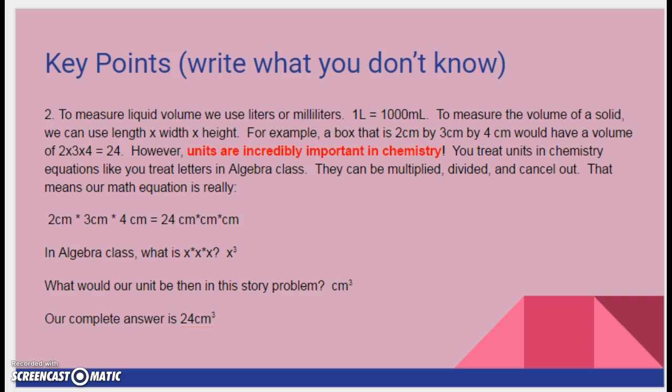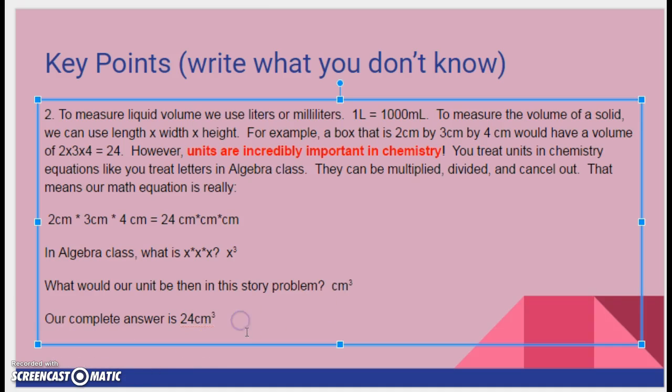However, units are incredibly important in chemistry. I can't tell you how many times people get stuff wrong because they don't look at the units. Units are what come after the number. So if I'm talking about 24 rings, 24 bananas, 24 ounces, okay, the whatever that 24 is, that's going to be your unit. You treat units in chemistry equations like you treat letters in algebra class. So units can be multiplied, divided, and canceled out. That means our math equation is not 2 times 3 times 4. It's really 2 centimeters times 3 centimeters times 4 centimeters, which is 24 centimeters times centimeters times centimeter.